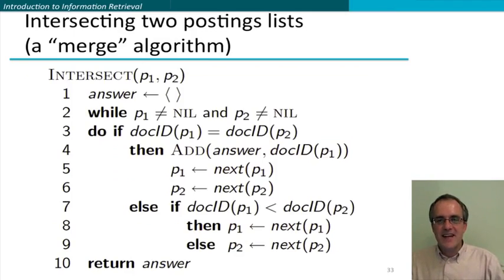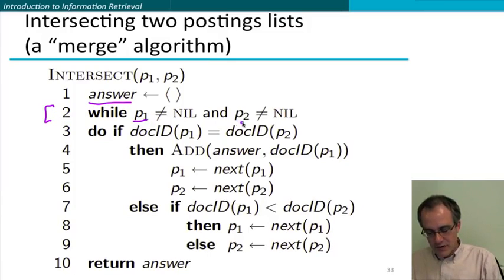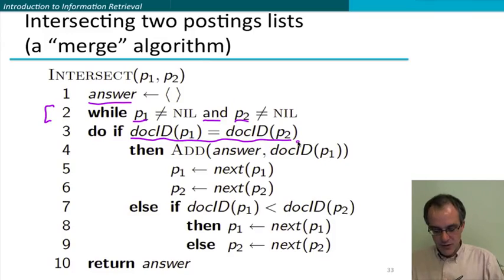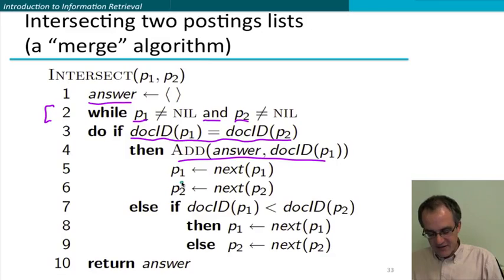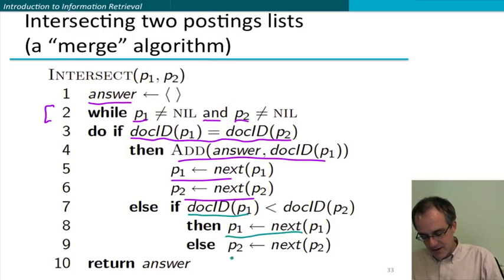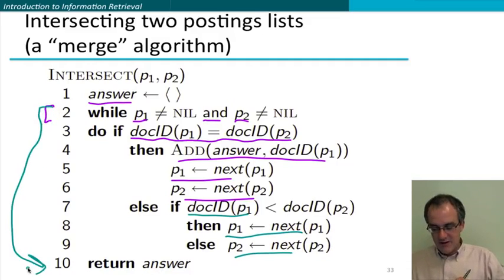Here's the postings list intersection algorithm one more time as the real algorithm, but hopefully you can see it's doing exactly the same as what I was doing by hand. So we start here with the answer set as empty, and then we're going to be doing this while loop while the postings lists are both not equal to nil. Because as soon as one's nil, we can stop. So that's the AND operation. So then at each step what we do is ask whether the document ID of the two pointers is the same. If so, we add it to our answer and we can advance both pointers. And if not, we work out which doc ID is smaller, and then we advance that pointer. So either this one or this one. And that was exactly what I was doing. And then as soon as one of the document lists runs out, we can return our answer set.